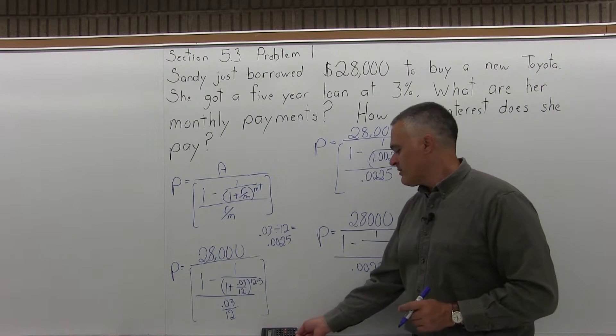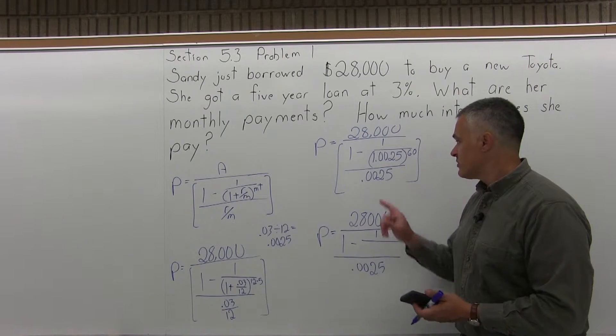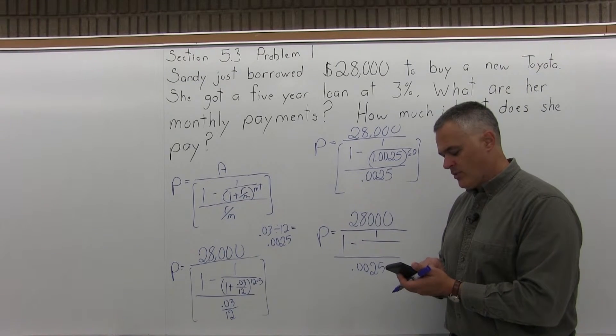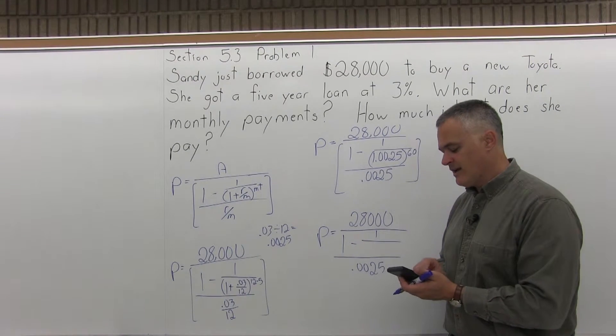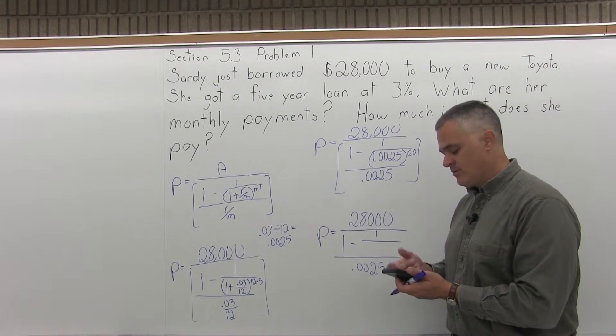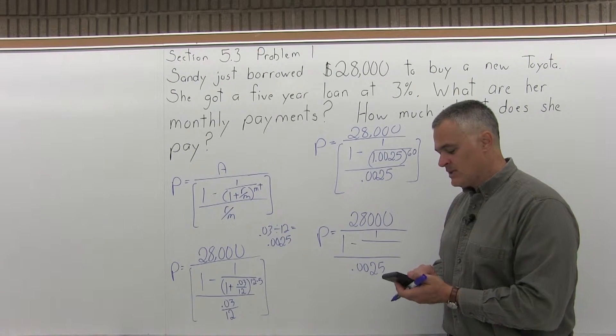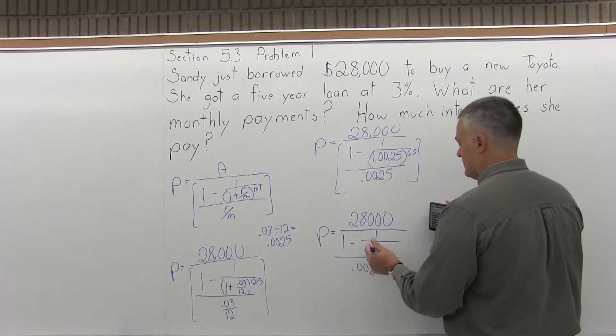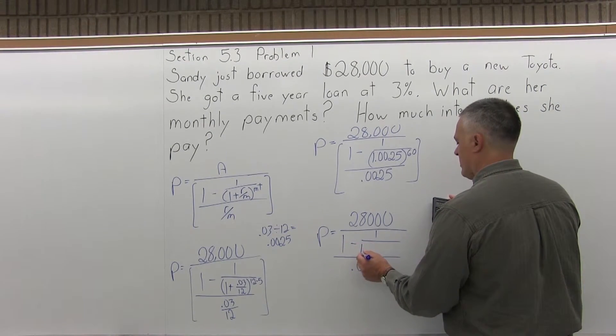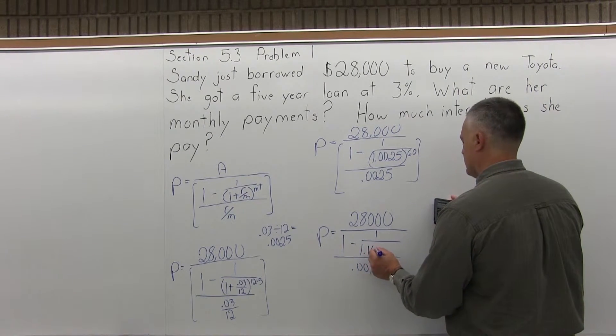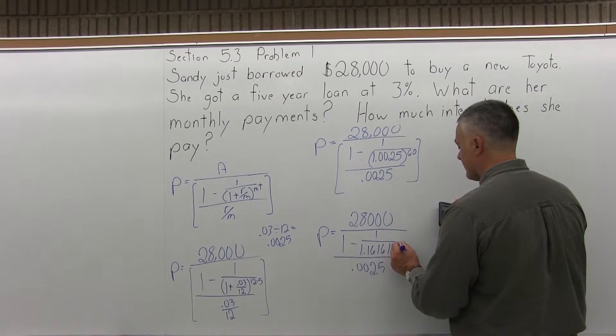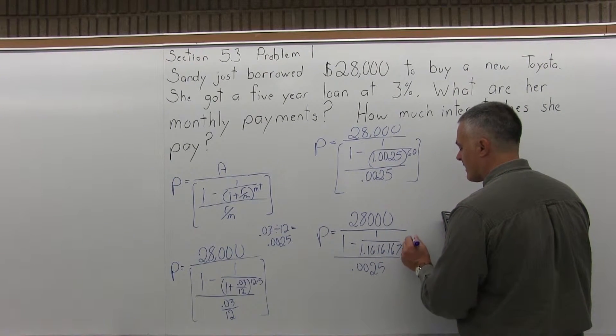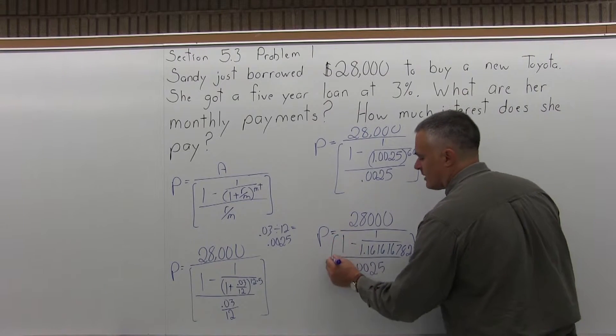Just leave that blank for a second. And the denominator of the brackets is .0025. Now with my calculator, I will clear the screen and I will enter 1.0025, press the exponent button, put in the exponent of 60, press equals. And the answer for 1.0025 to the 60th power winds up being 1.161616782.